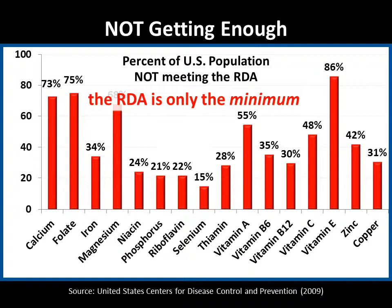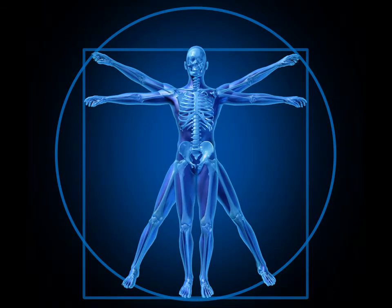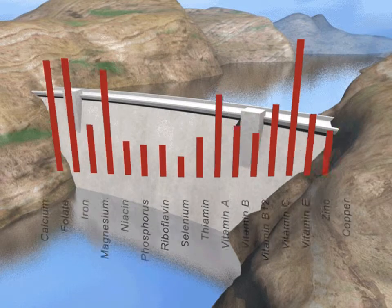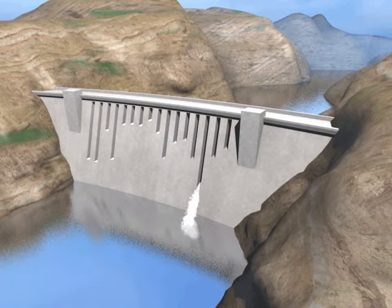Now we'll show you an analogy to illustrate what this chart really means for your health. In this analogy, the dam represents the human body. If there are no deficiencies in the dam, the dam holds water and functions as it should. Now let's have a look at this deficiency chart and superimpose it on the dam, pretending that it creates holes in the dam, which cause the dam to leak and not hold water like it should.